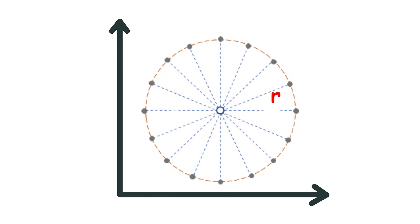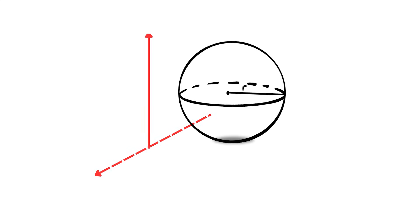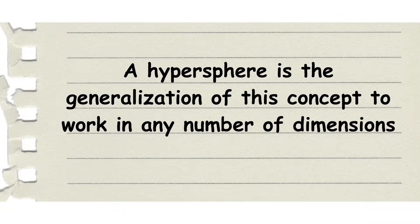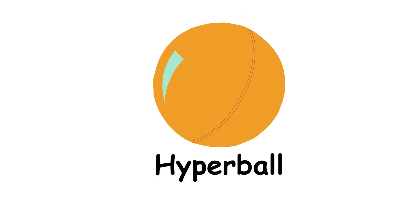Hypersphere and hyperball. In two-dimensional space, every point on a circle is the same distance away from the center. That distance is known as the circle's radius. The same goes for the sphere and its radius in three-dimensional space. A hypersphere is the generalization of this concept to work in any number of dimensions. For instance, the version in 1D space is simply the set of two points equidistant from a midpoint, with that distance being the radius. Versions of this concept also exist in 4D, 5D, 6D, etc., though these are hard to visualize. The interior of a hypersphere is called a hyperball. For instance, a disc — the interior of a circle — is a hyperball. And a ball — the interior of a sphere — is a hyperball.